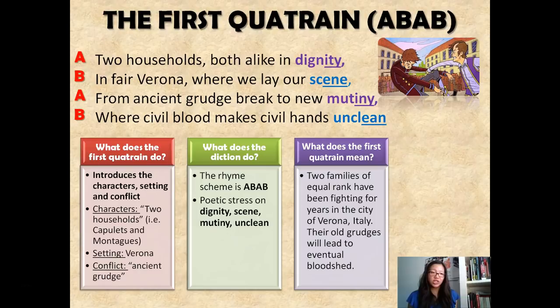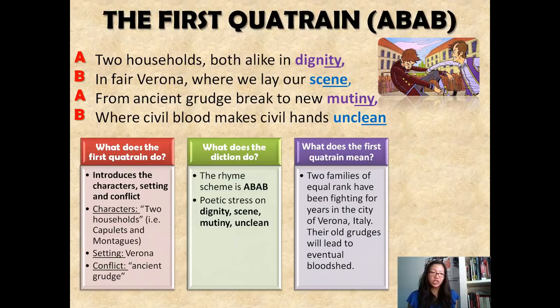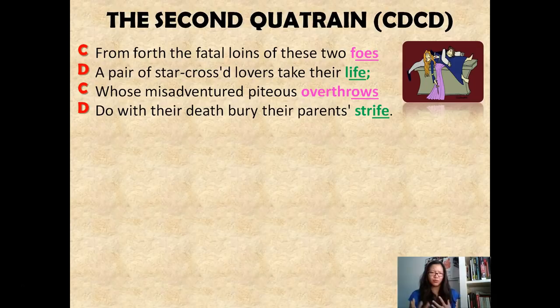The second quatrain takes the form of CDCD and elaborates on the first quatrain. We're going to see why the rising action ensues from the feuding between the two families. 'From forth the fatal loins of these two foes, / A pair of star-crossed lovers...' — we see star-crossed lovers, perhaps adding fuel to the feud. '...Take their life, whose misadventured piteous overthrows / Do with their death bury their parents' strife.'